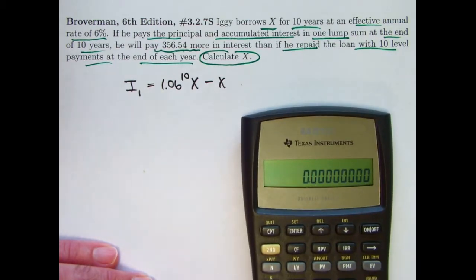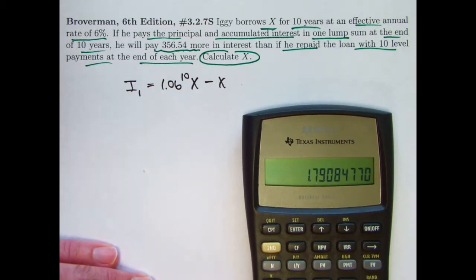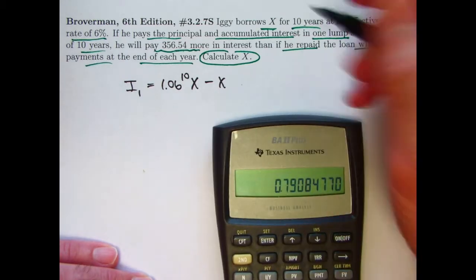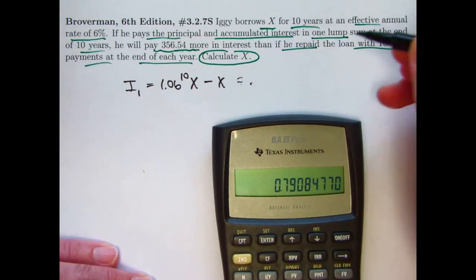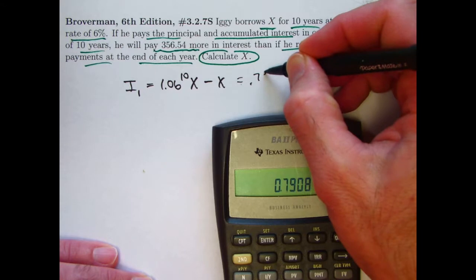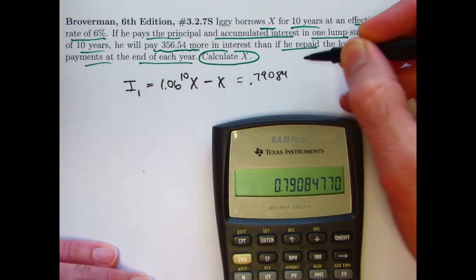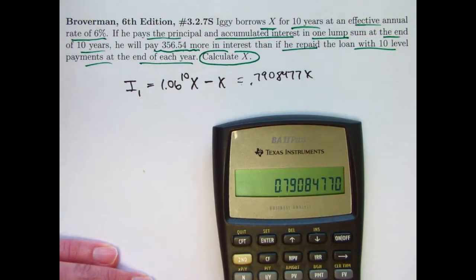Let's find 1.06 to the 10th power. It's about 1.79. Let's subtract 1 from that. This simplifies. Let me include all the decimal places. This is 0.7908477X. There is the amount of interest paid with plan 1.